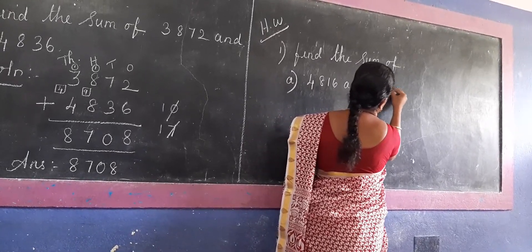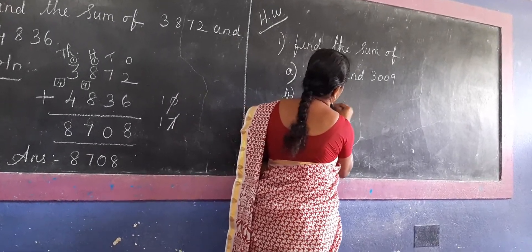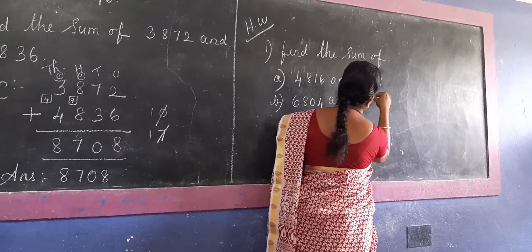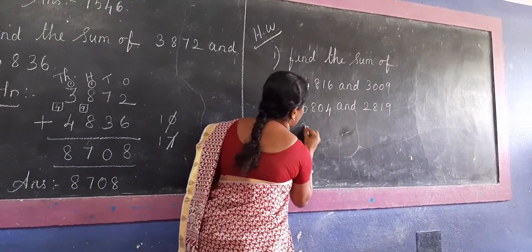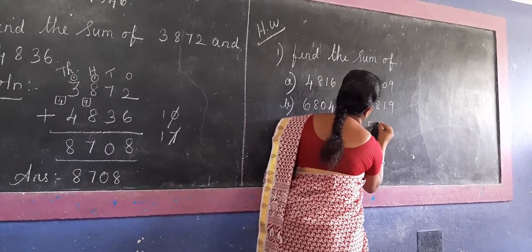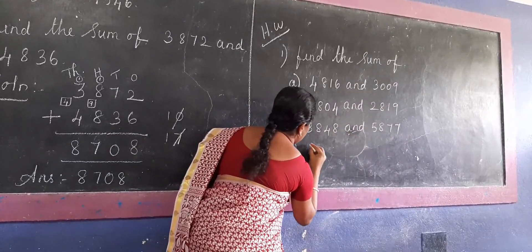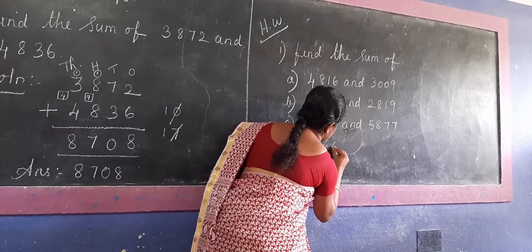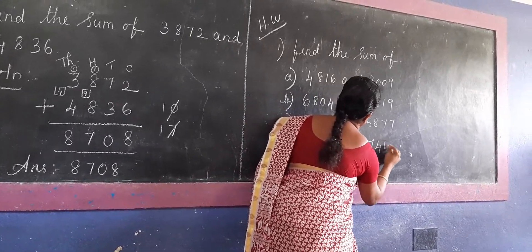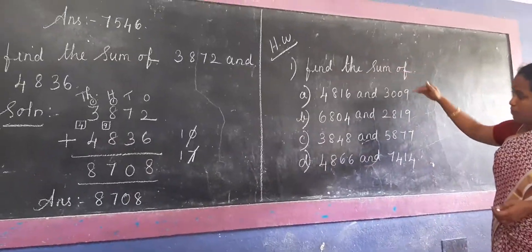In the third, we find the sum of 4816 and 3009, 6884 and 2889, 3848 and 5877, and the last problem: four thousand eight hundred and sixty six and seven thousand four hundred and fourteen.